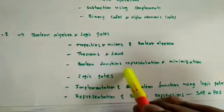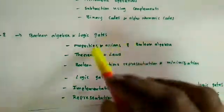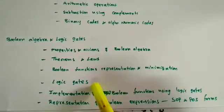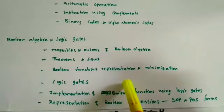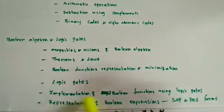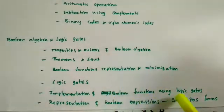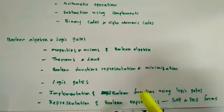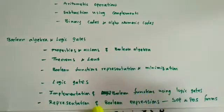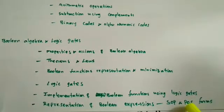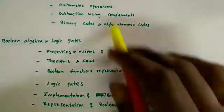We also saw how to minimize any Boolean function using those laws. We discussed different types of logic gates — AND, OR, NOT, NAND, NOR, XOR, and XNOR — and the implementation of Boolean functions using those gates. The last concept covered was representation of Boolean expressions in SOP or POS forms.